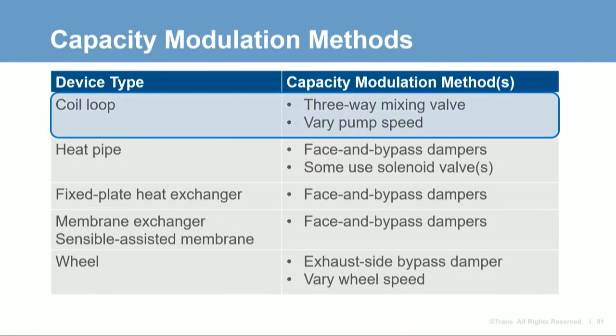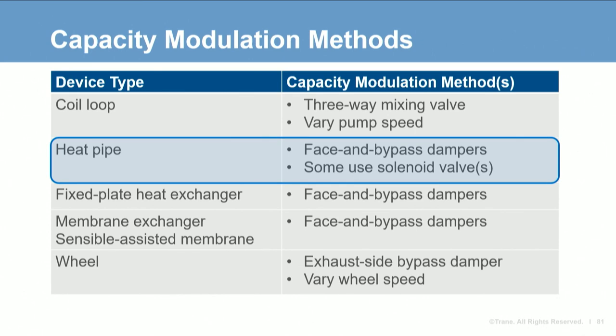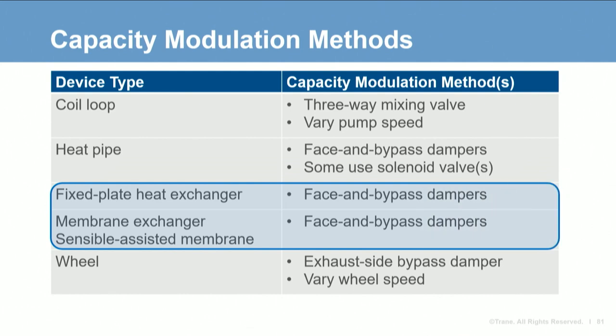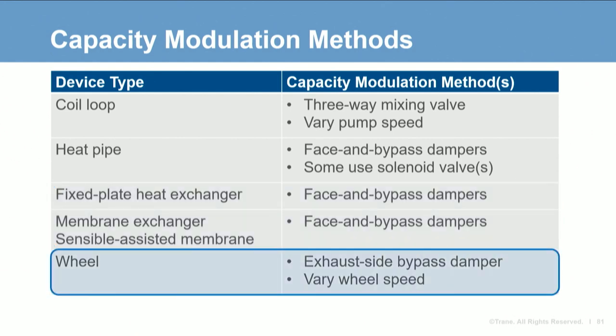Many coil loops use a three-way valve to reduce the flow rate through the supply side coil when less heat transfer is desired. Alternatively, a variable speed pump can reduce fluid flow rate and heat transfer. Heat pipes use face and bypass dampers or multiple integral solenoid valves to reduce capacity. Fixed plate heat exchangers modulate their face and bypass dampers to vary the amount of heat transferred. Membrane exchangers also use face and bypass dampers. For a wheel, TRANE recommends modulating the exhaust side bypass damper rather than varying the rotational speed. A white paper explaining this recommendation is included in the bibliography.